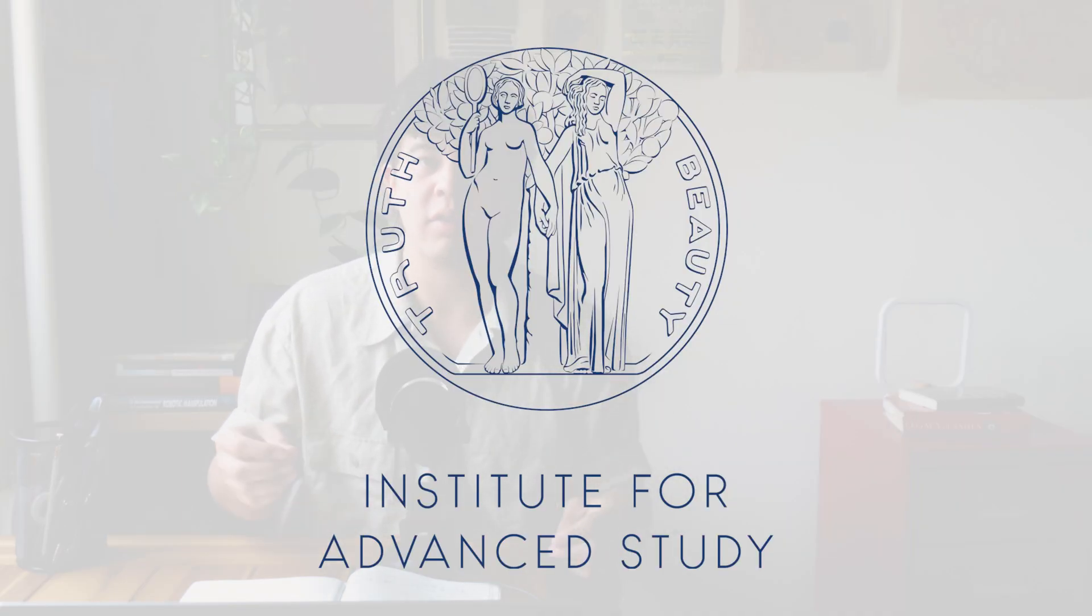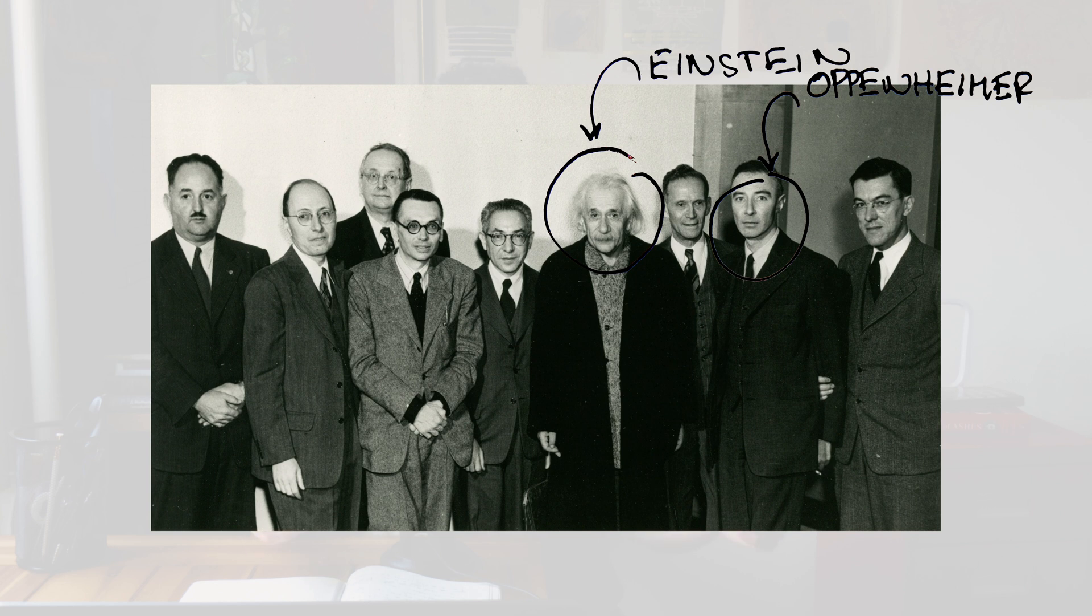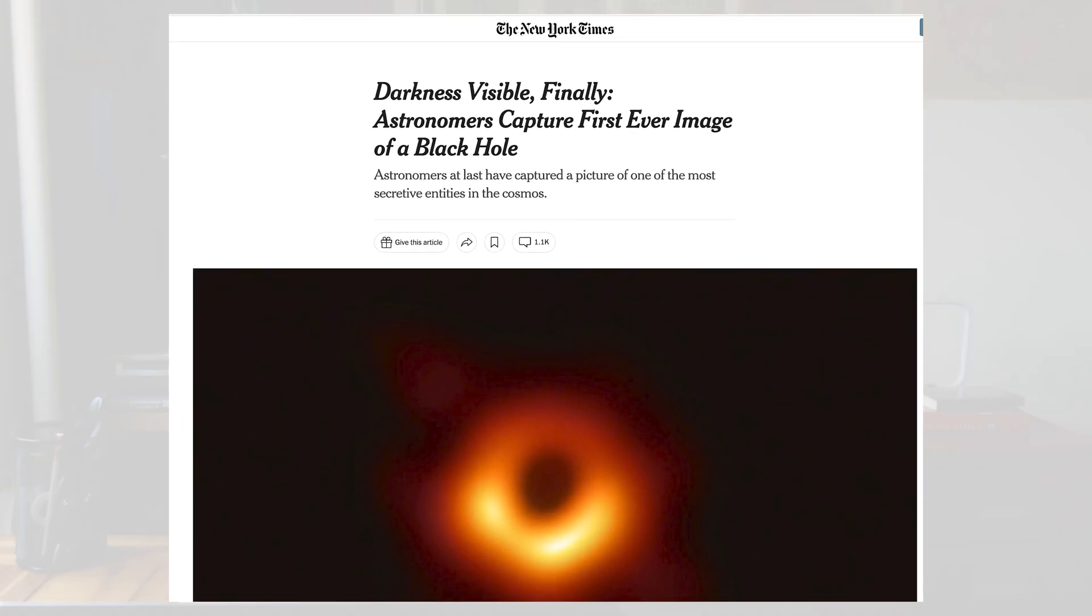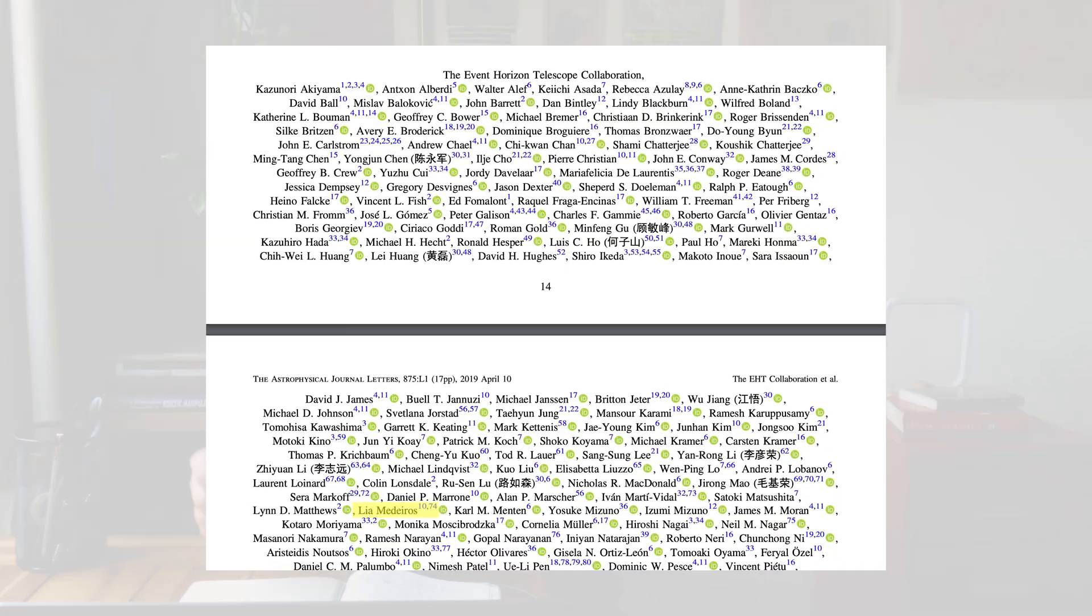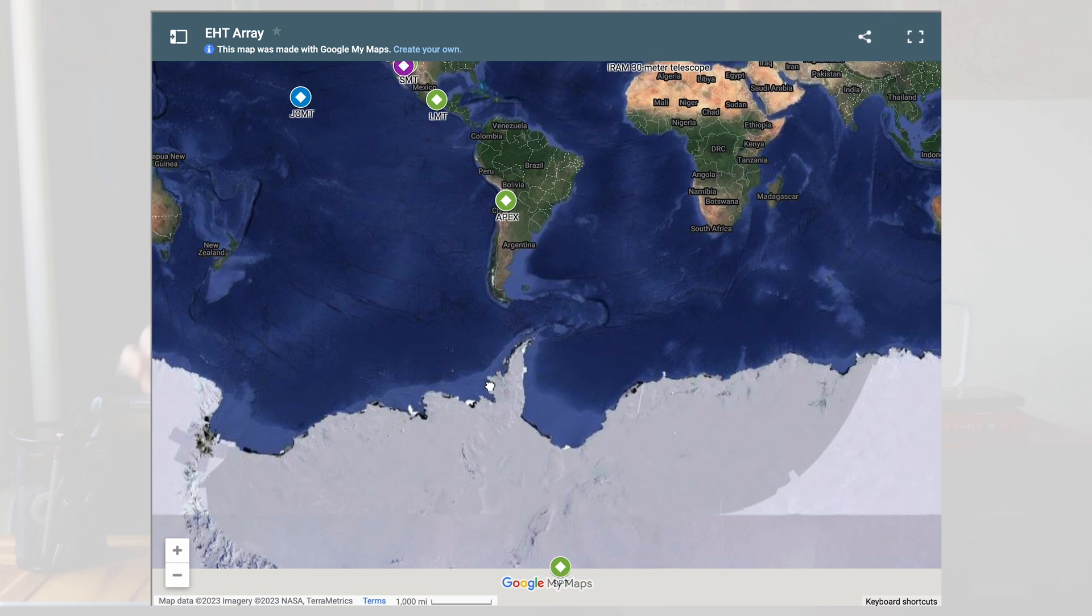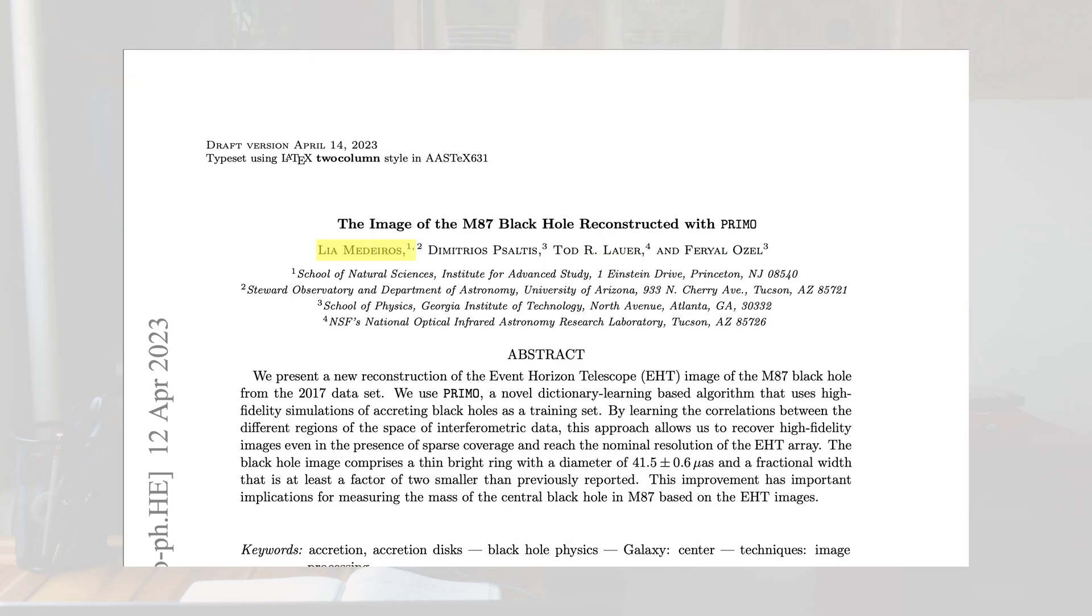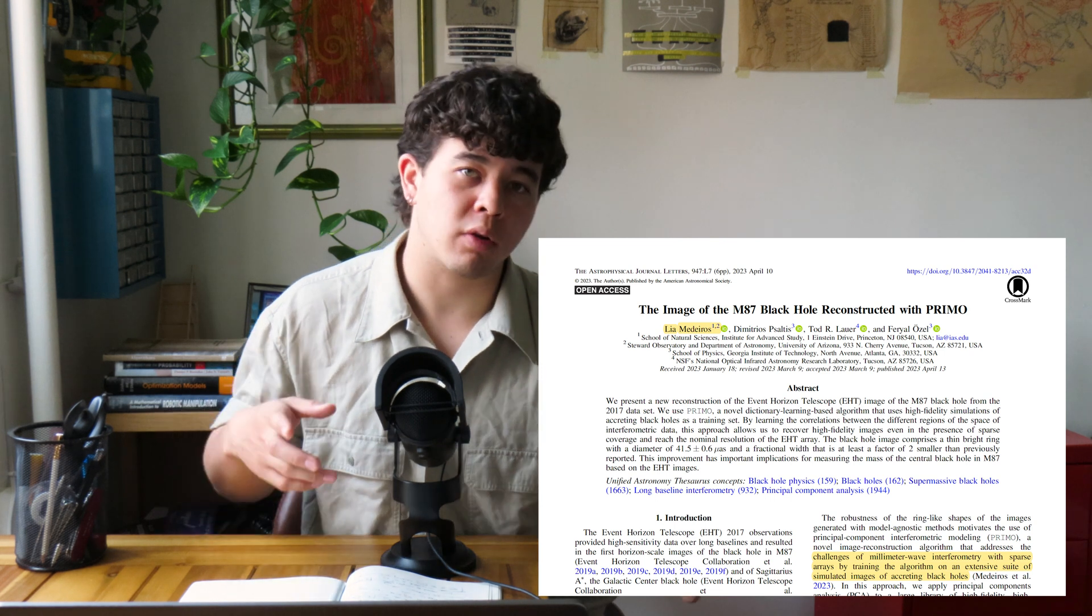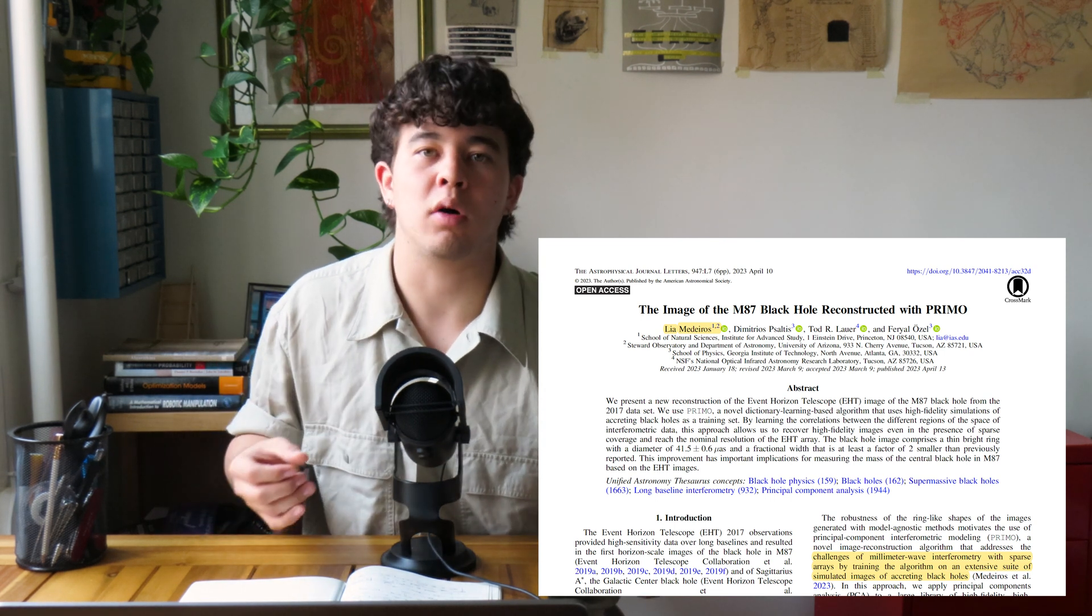Leah Medeiros is an astrophysicist at the Institute for Advanced Study, where Einstein, Oppenheimer, and many other people worked, and where she studies computational approaches for understanding black holes. She was an author on the original paper publishing the first-ever image of a black hole, and she's been working for many years with the Event Horizon Telescope, this network of telescopes spanning the globe, to publish many papers on black holes.